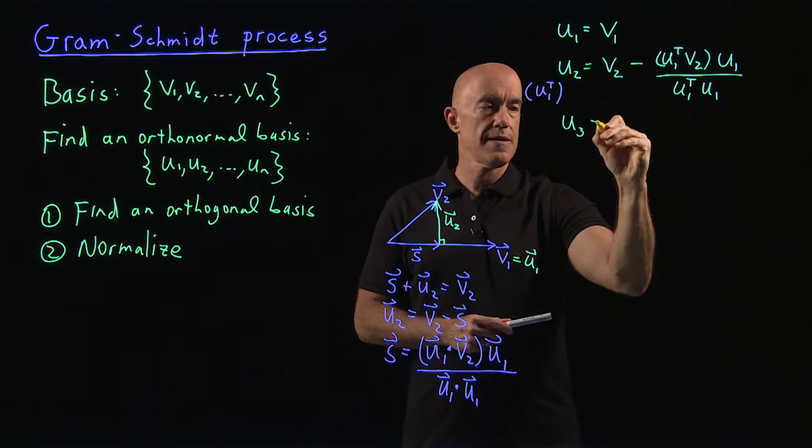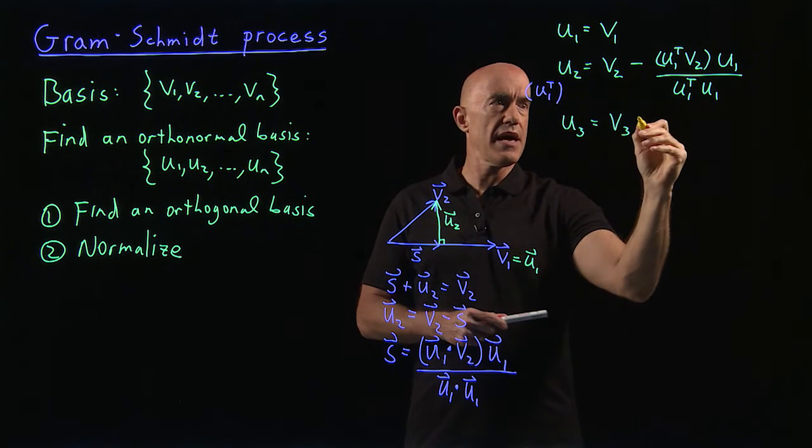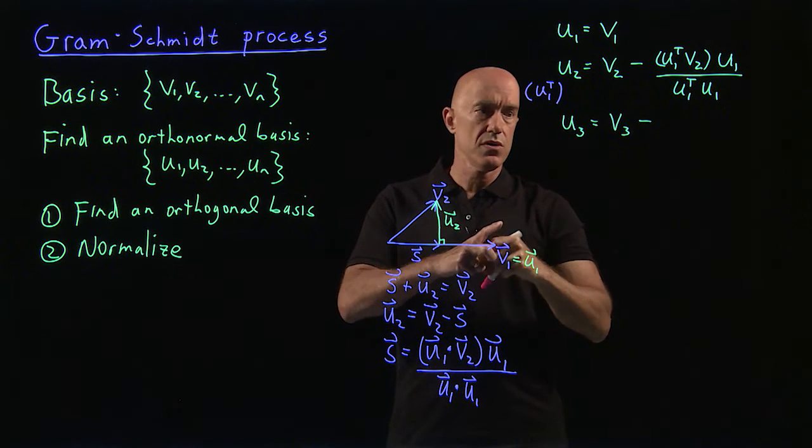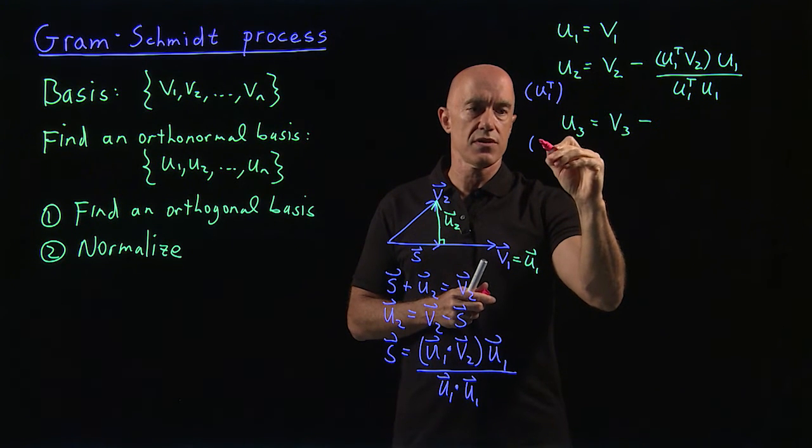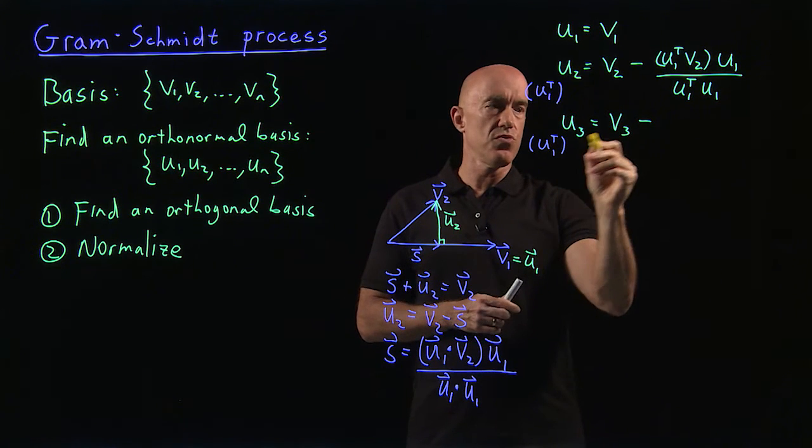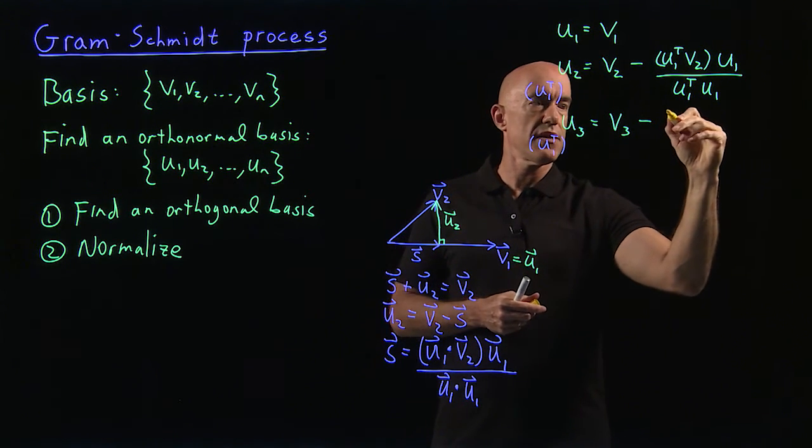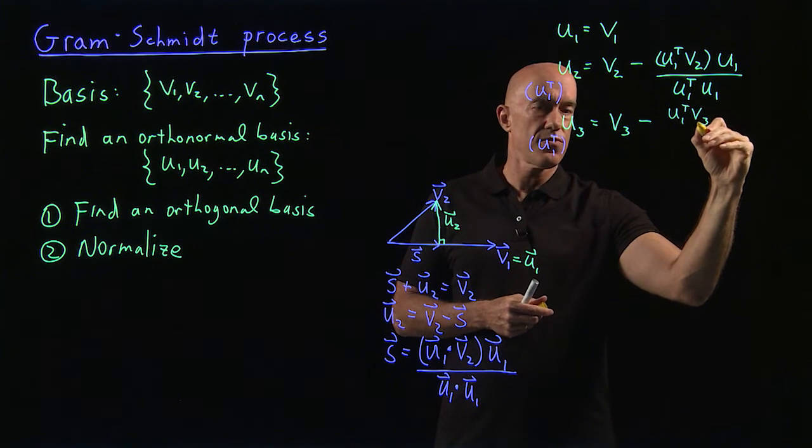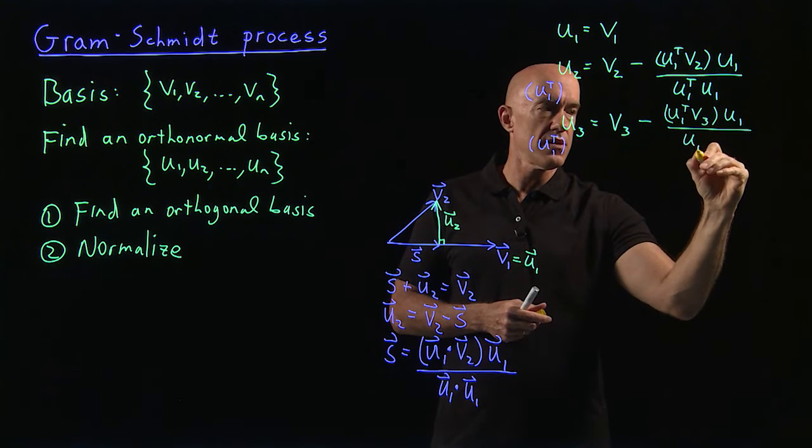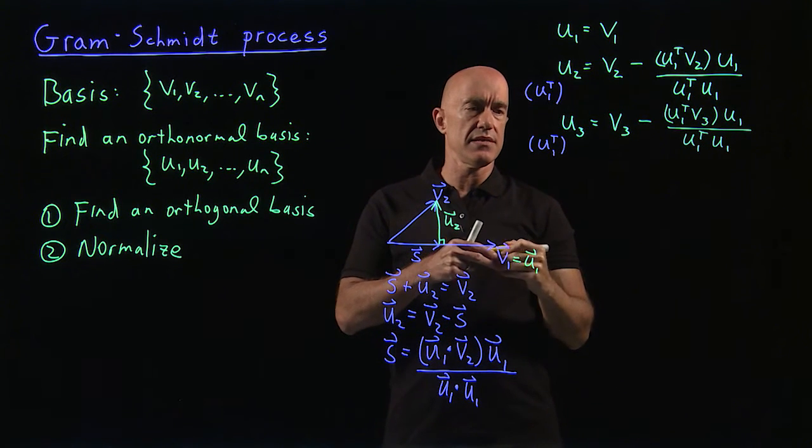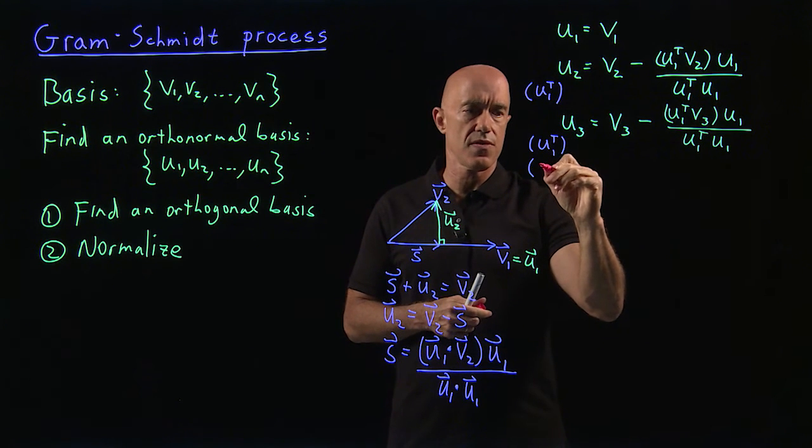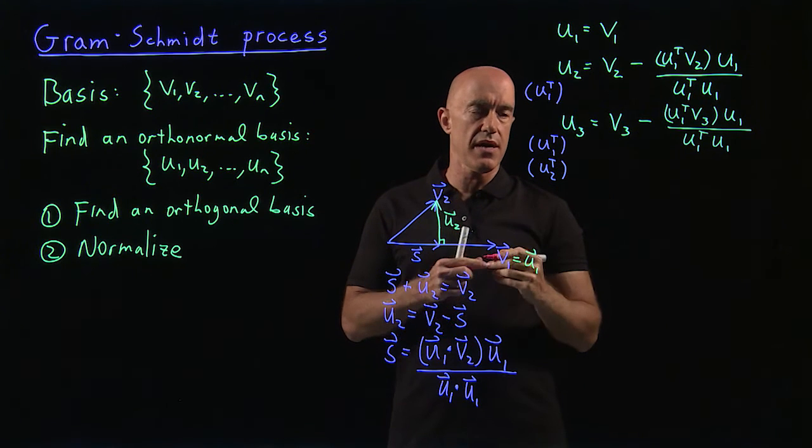We can continue with this. So we can write U3 equal to V3. And then again, we need to subtract the part of V3 that is along U1 and the part that is along U2. So to see that, we can look at first what happens if we multiply on the left by U1 transpose. So then we would get U1 transpose V3 on the right. So we want to subtract U1 transpose V3. And then U1 transpose U1 divided by U1 transpose U1. So that guarantees that U1 and U3 are orthogonal. But we also need to guarantee that U2 and U3 are orthogonal.